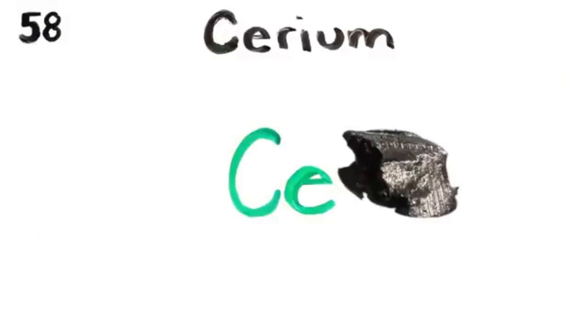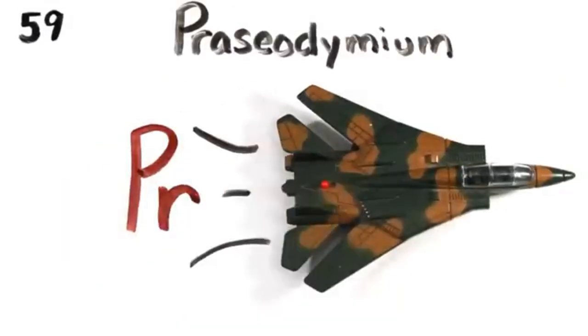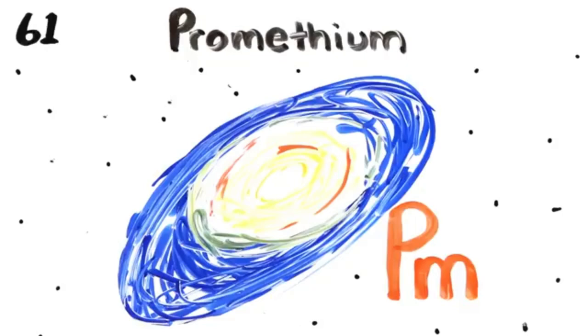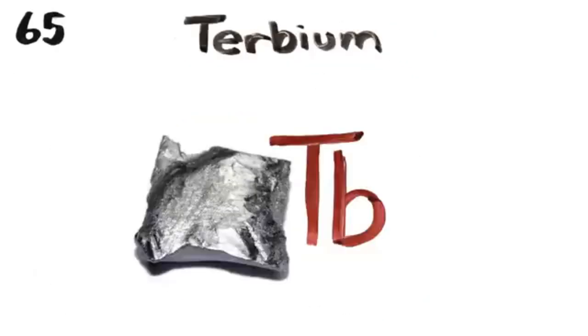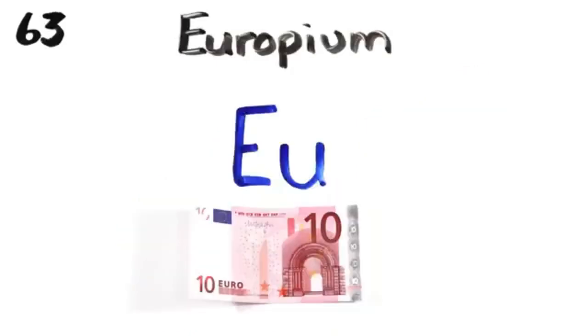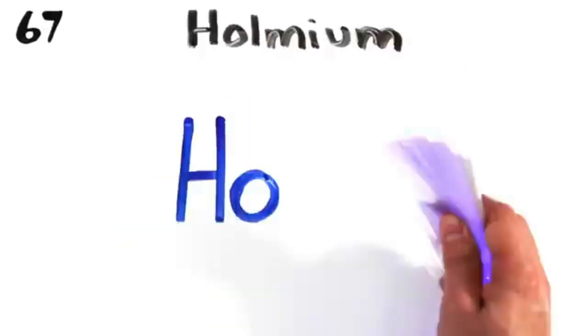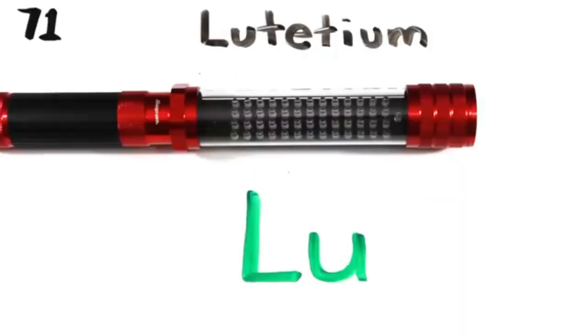Lanthanum, cerium, and praseodymium, neodymium, promethium, then 62's samarium, europium, gadolinium and terbium, dysprosium, holmium, erbium, thulium, ytterbium, lutetium.